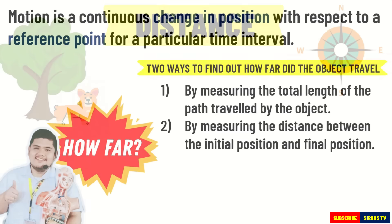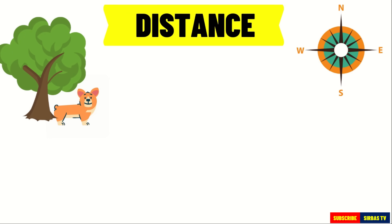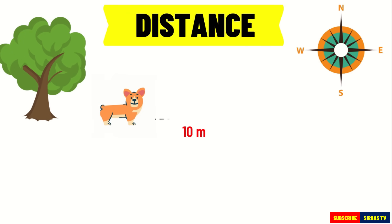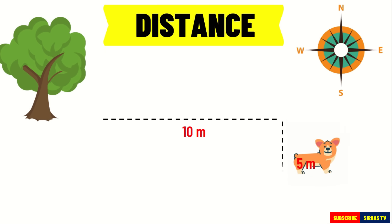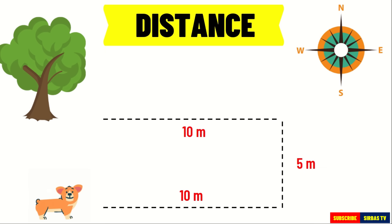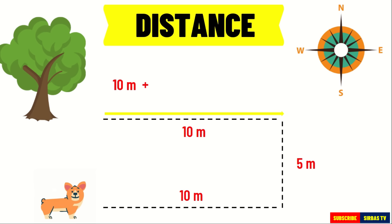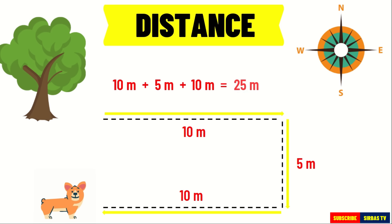Let us first talk about distance. Take a look at this example. A dog ran 10 meters to the east, then 5 meters to the south, and another 10 meters to the west. From this example, what is the total length traveled by the dog? To find this, we just need to add the length traveled by the dog: 10 meters to the east, 5 meters from east to south, and 10 meters from south to west. So the total length traveled by the dog is 25 meters.